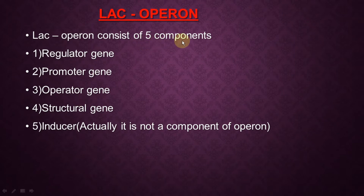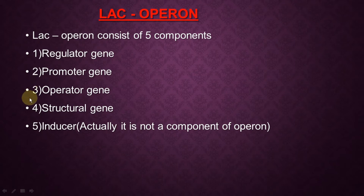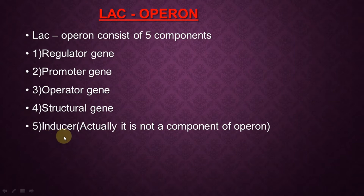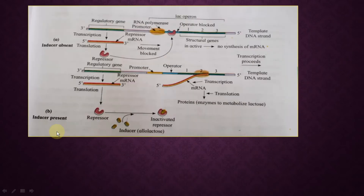Lac Operon consists of five components: regulatory gene, promoter gene, operator gene, structural gene, and inducer — abbreviated as R-P-O-S-I. Actually, the first four are the important constituents of Lac Operon. Inducer is not a component of Lac Operon itself, but it plays an important role in the Lac Operon process, which is why we include it here.